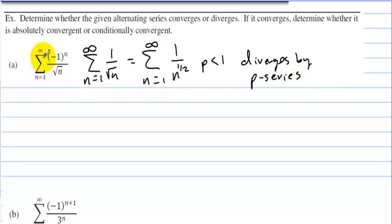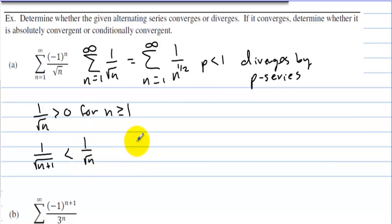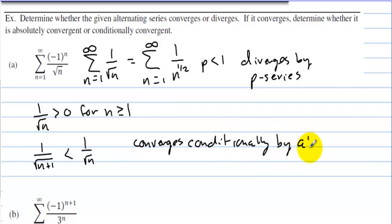Now we have to look to see if the original series converges. This is an alternating series, so we have to show that 1 over the square root of n is greater than 0 for n ≥ 1 — and it is. Then we have to show that 1 over √(n+1) is less than 1 over √n. So this converges conditionally by the alternating series test.